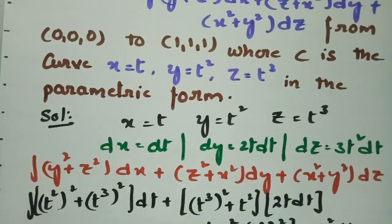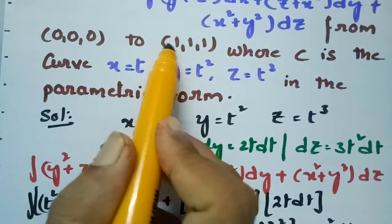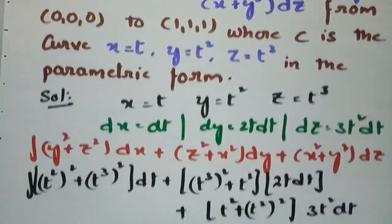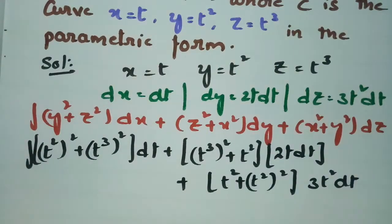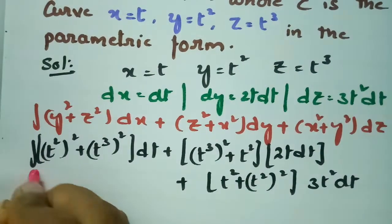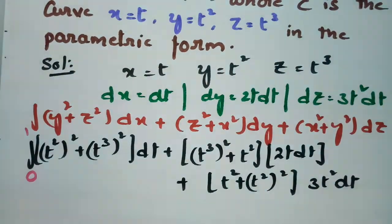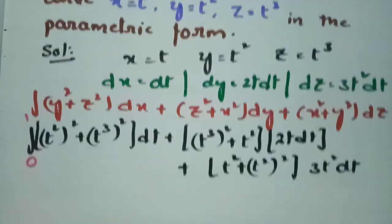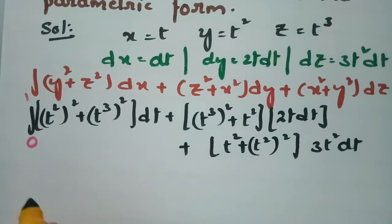The limits are from 0 to 1, 0 to 1, 0 to 1. So the t limits are also from 0 to 1.